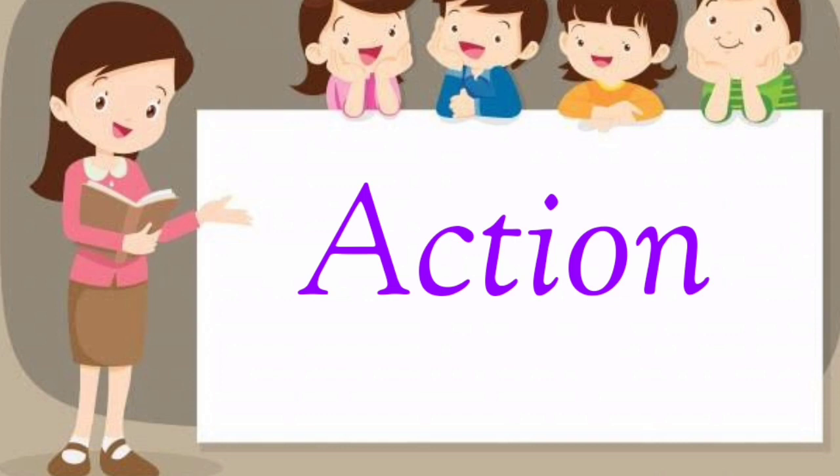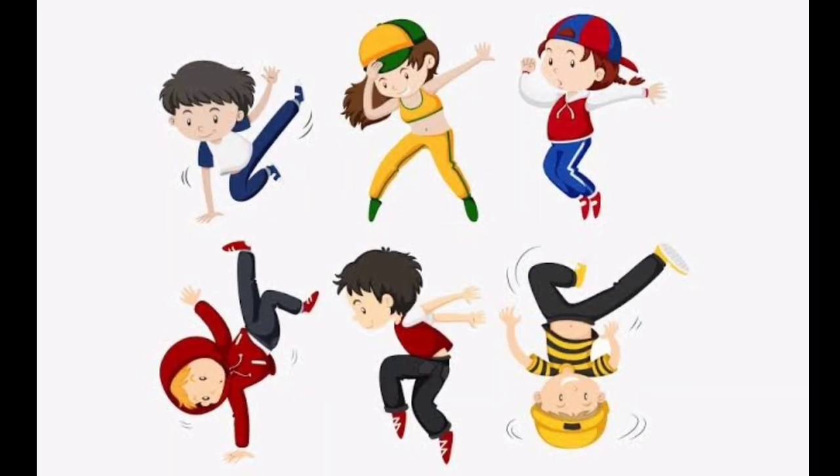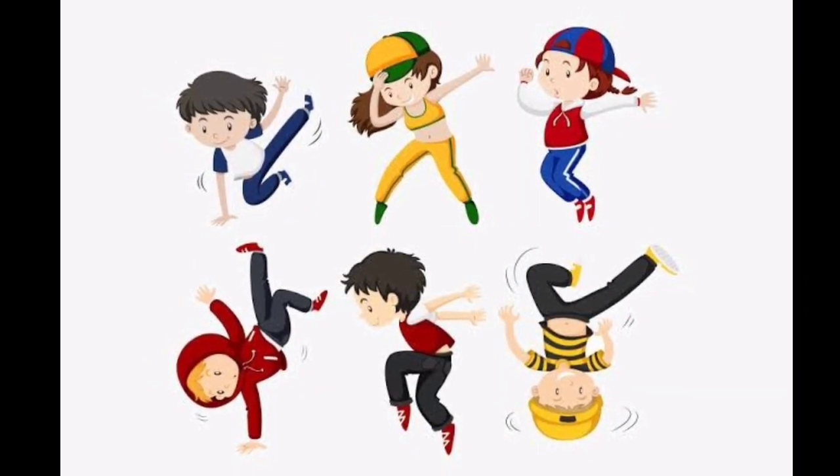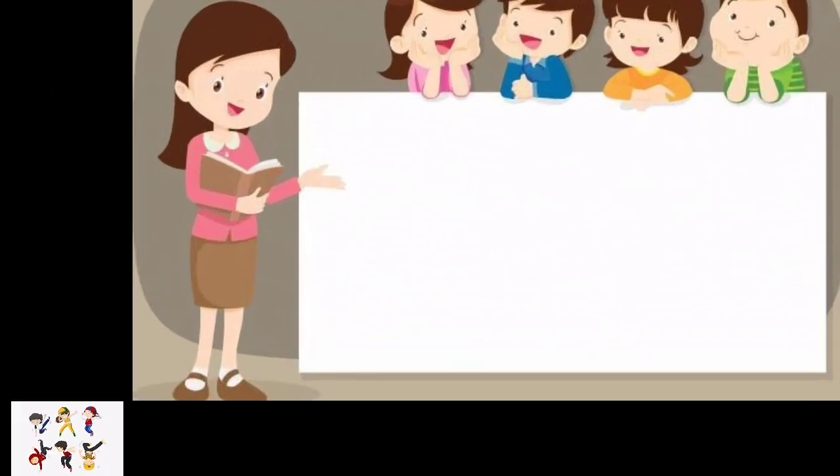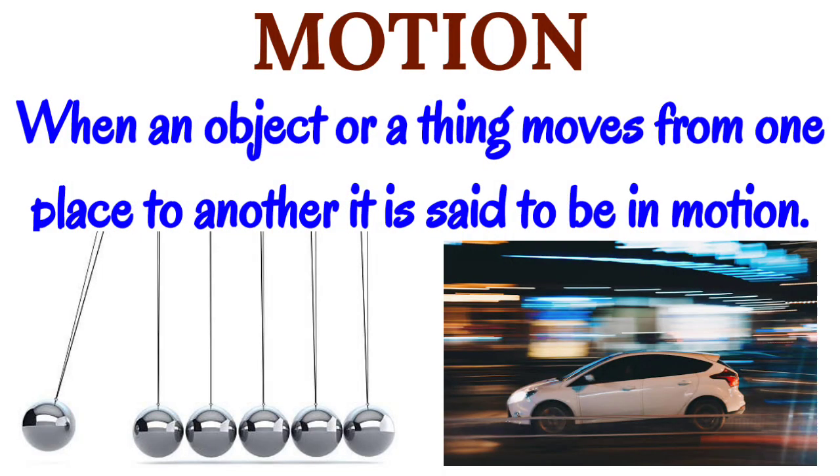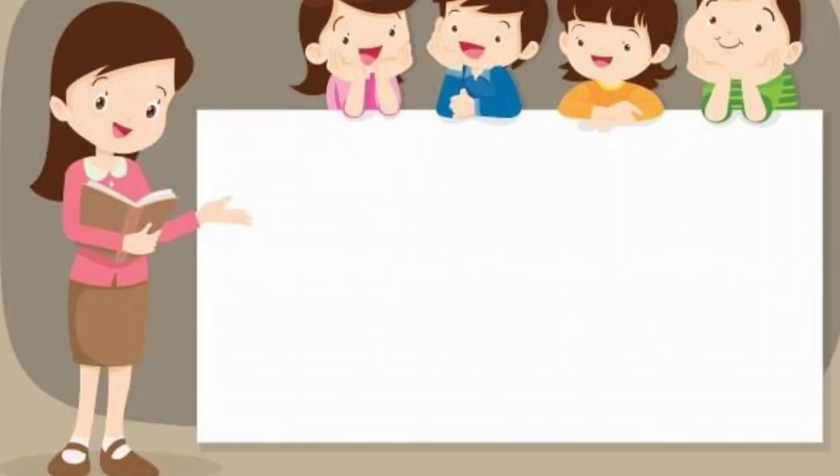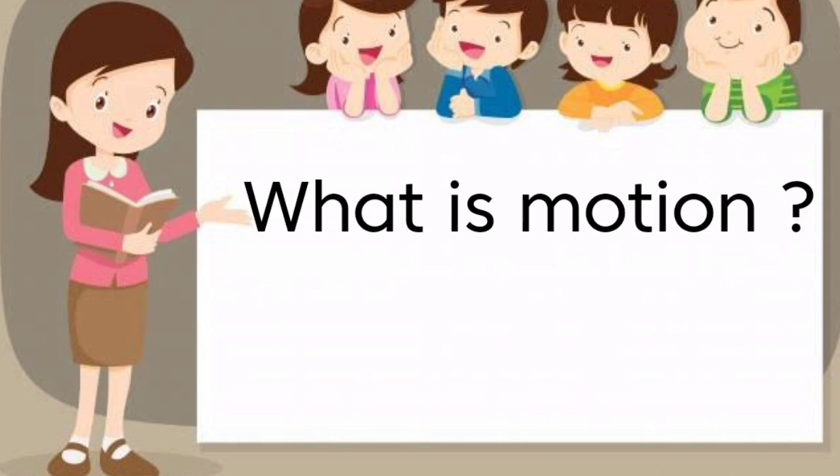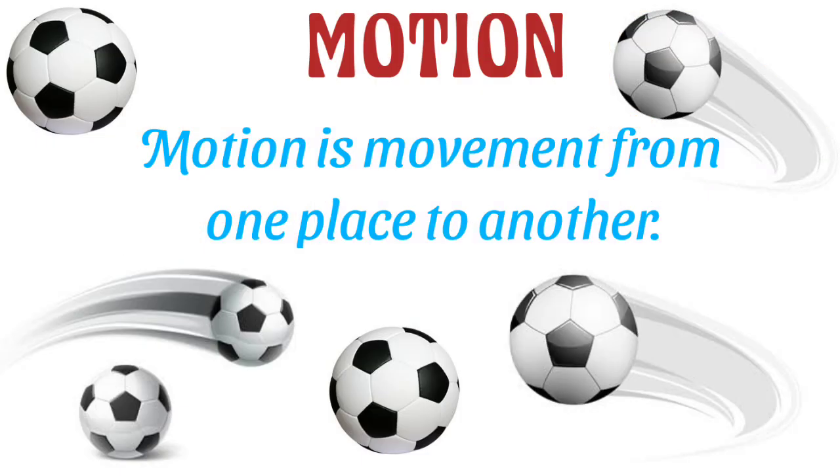Action is the motion which gives the required result. When an object or a thing moves from one place to another, it is said to be in motion. What is motion? Motion is movement from one place to another.